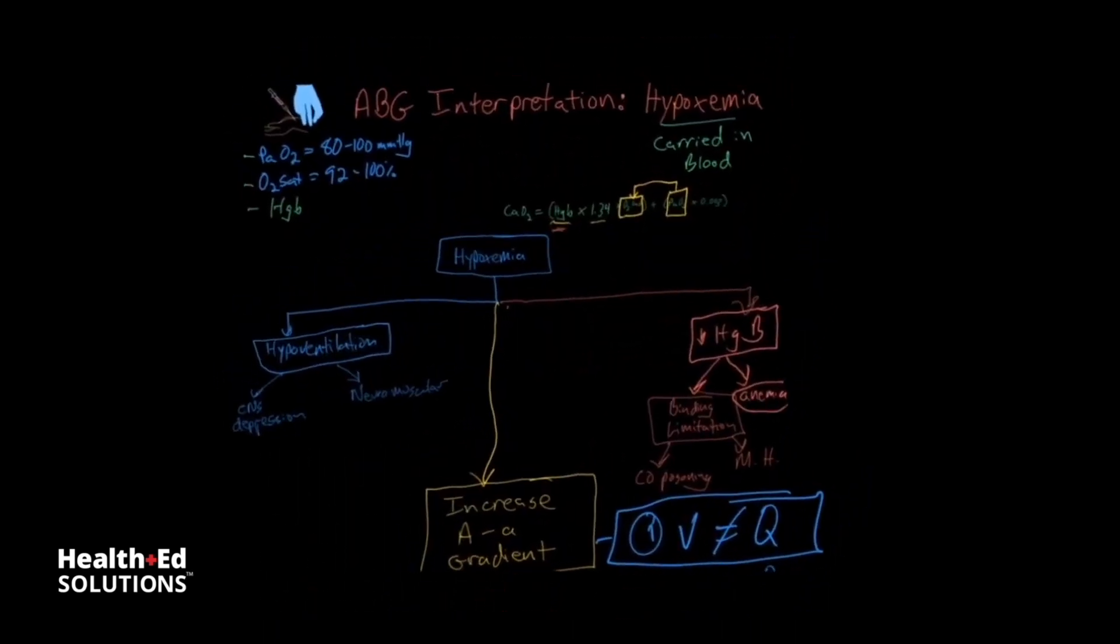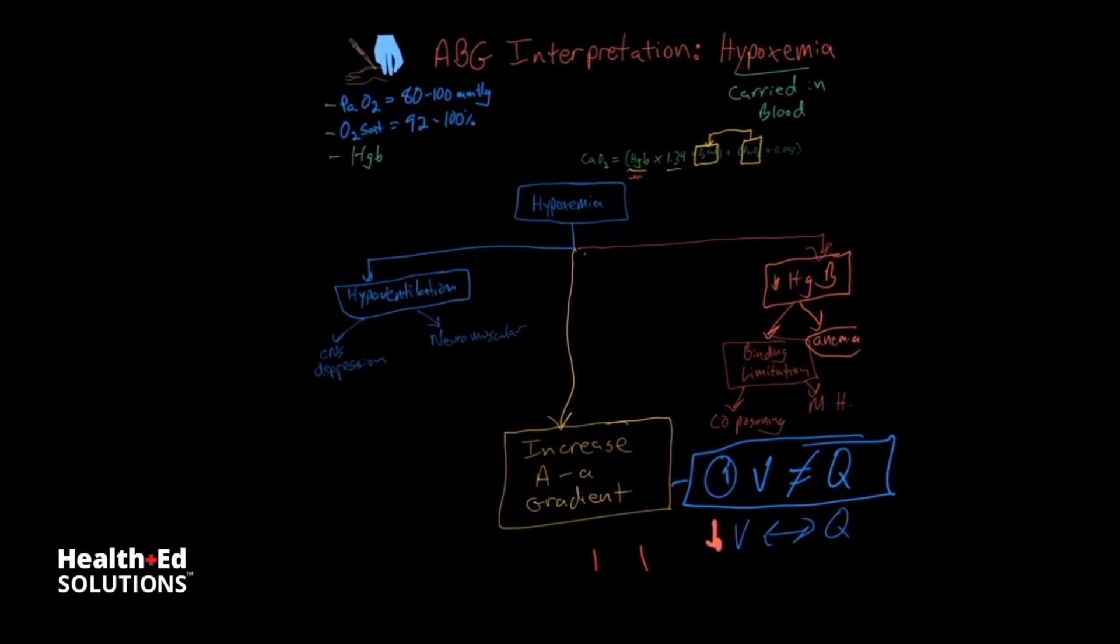Now before we finish, I want to talk about one other piece of information that's very important to consider when you're thinking about hypoxemia. And that's the FiO2. That's the fraction of inspired oxygen saturation. And this isn't a measurement from the ABG itself. This is the amount of oxygen that the patient is breathing in. So if they're breathing in room air, their fraction of inspired oxygen is about 21%. And this increases as you put them on two liters or you put them on an under breather.